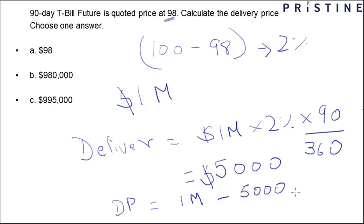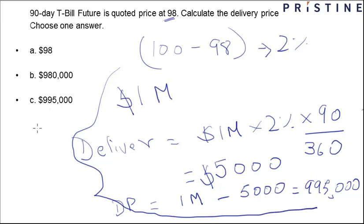That would be equal to $995,000. So that's actually one answer. Now there's another shortcut using which you don't need to do all these calculations. There's one simple shortcut which says that since these 90-day T-Bill future contracts are highly standardized, for every one basis point change, the discount changes